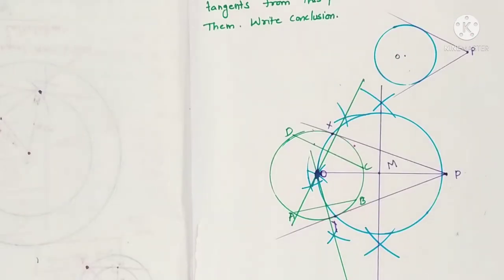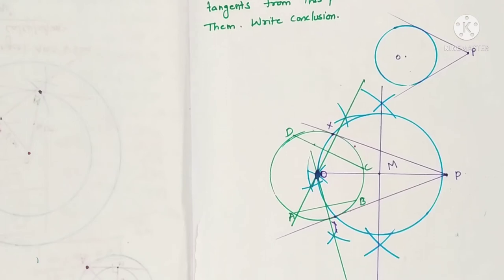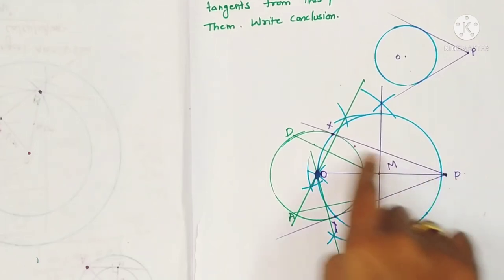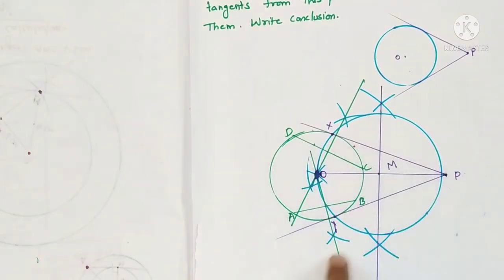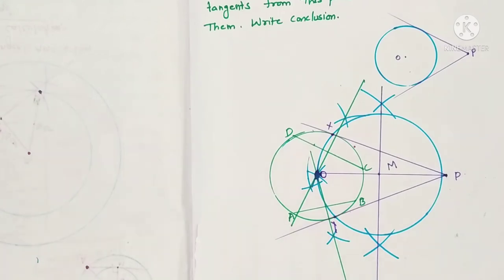Write the conclusion: we can conclude that the lengths of tangents drawn from an external point to a circle are equal.